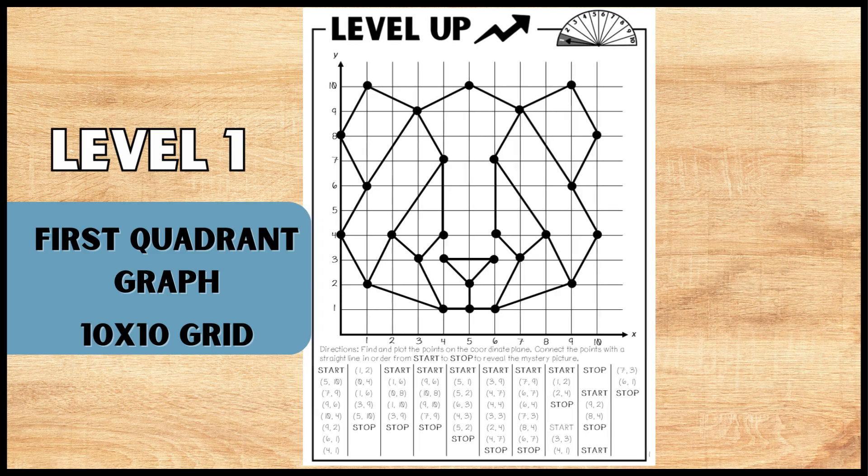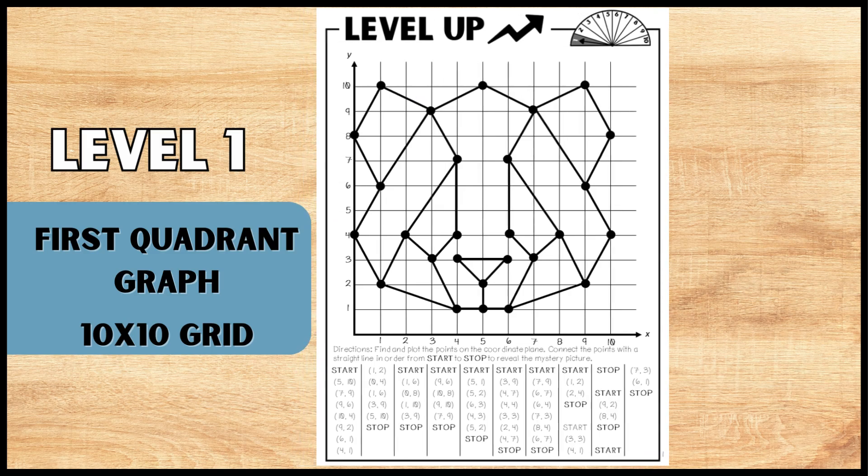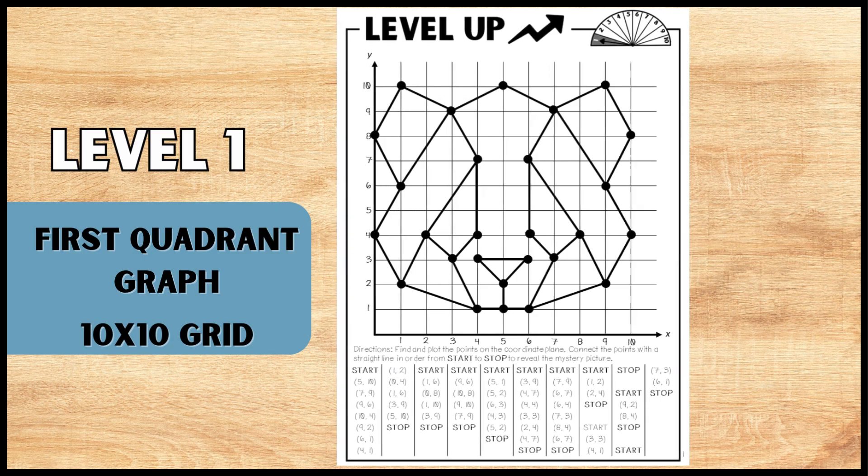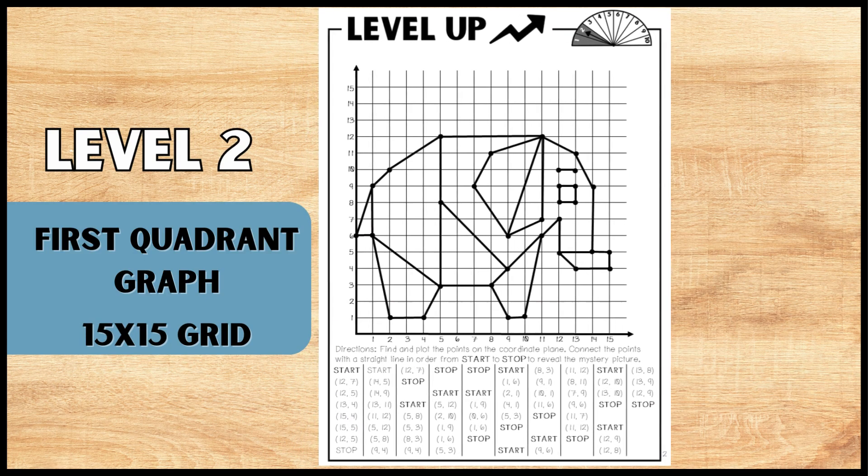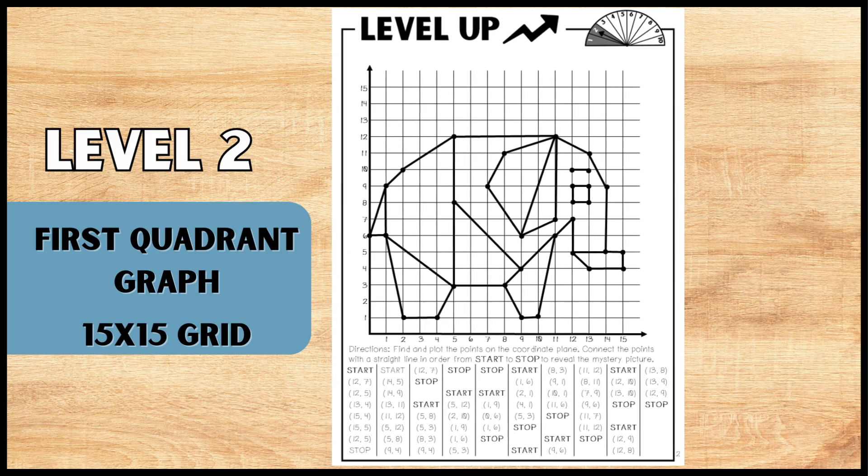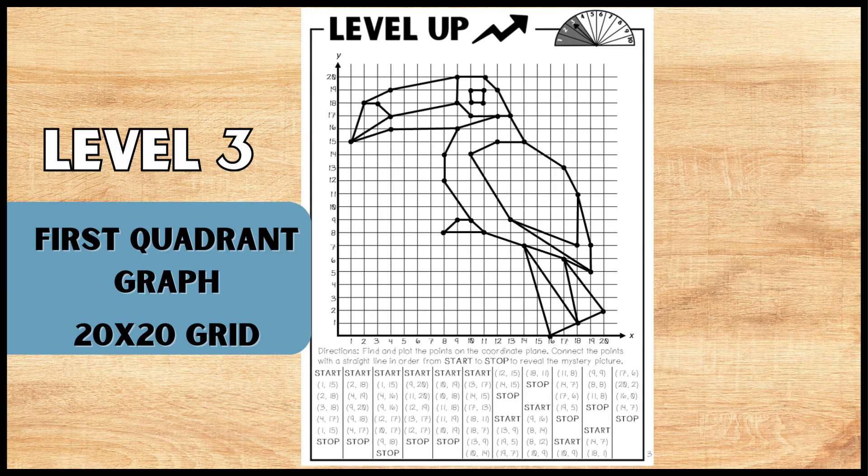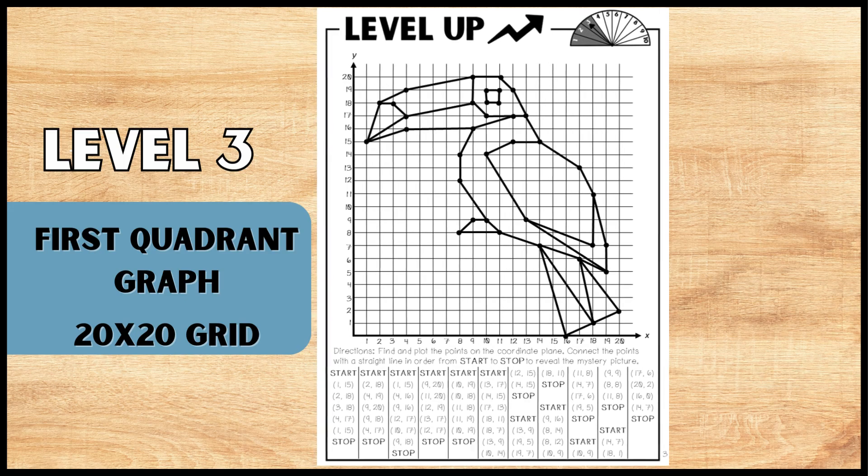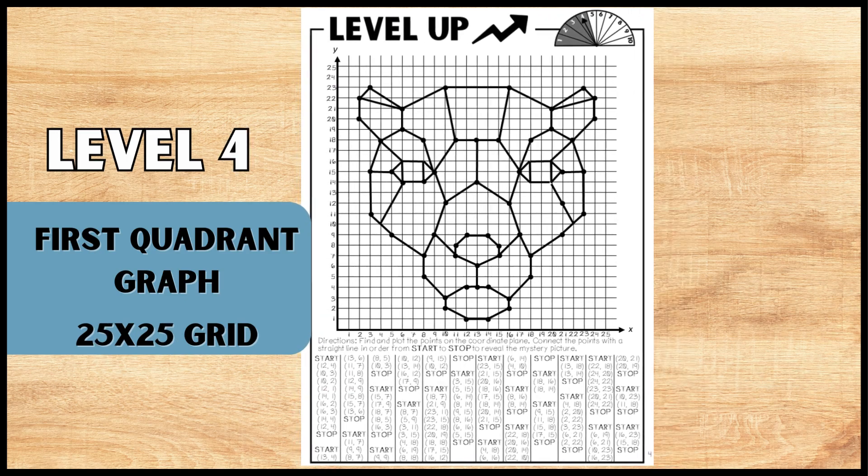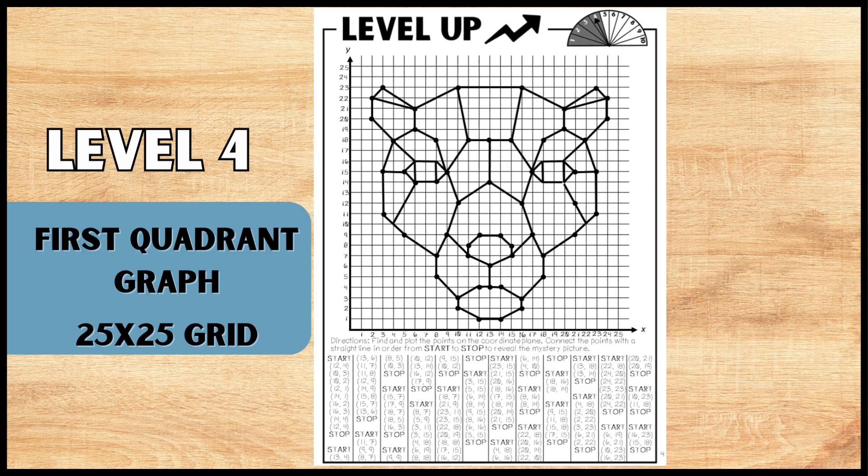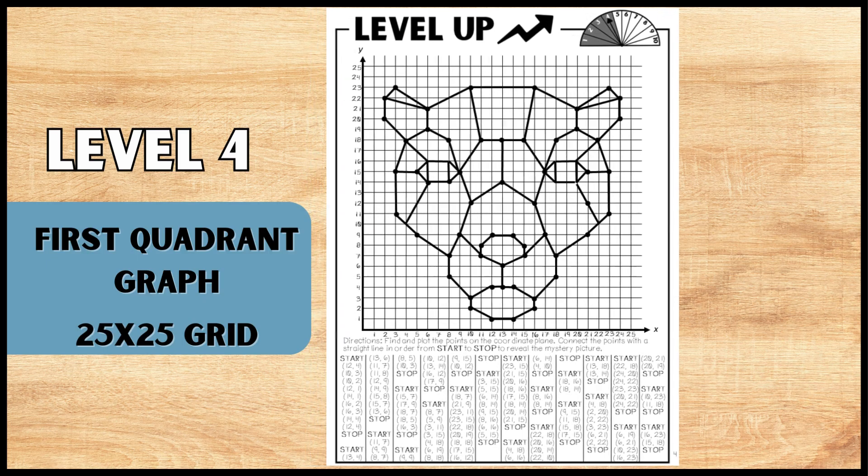Level 1 mystery picture is on a 10 by 10 first quadrant graph and graphs a panda. Level 2 mystery picture is on a 15 by 15 first quadrant graph and graphs an elephant. Level 3 is on a 20 by 20 first quadrant graph and graphs a toucan. And level 4 takes it up to a 25 by 25 first quadrant graph and graphs a tiger.